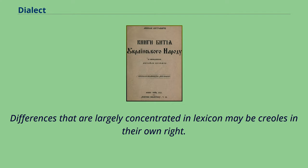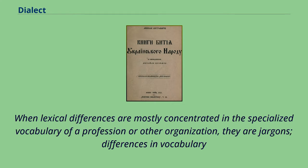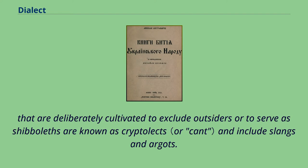Differences that are largely concentrated in lexicon may be creoles in their own right. When lexical differences are mostly concentrated in the specialized vocabulary of a profession or other organization, they are jargons. Differences in vocabulary that are deliberately cultivated to exclude outsiders or to serve as shibboleths are known as cryptolects, and include slangs and argots.